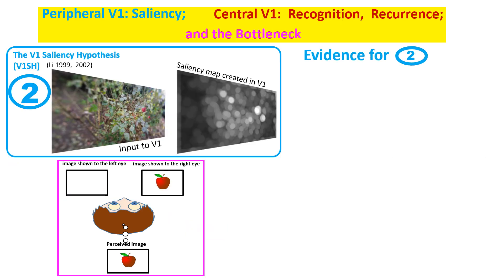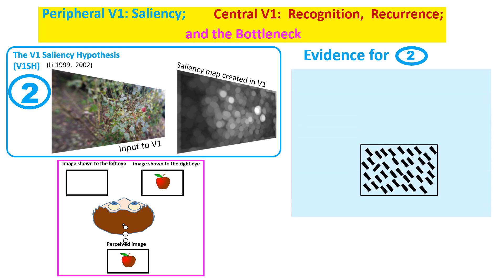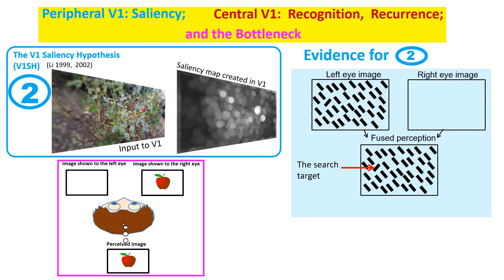Convincing evidence for the saliency map comes from the eye-of-origin feature for saliency. In this image, human observers are asked to quickly find a uniquely oriented bar. This is an example where all bars are shown to the left eye only. If one background bar is shown to the right eye instead, the perceived image is unchanged — this bar, unique in eye of origin, is not distinctive at all to perception.